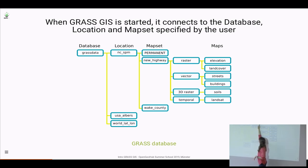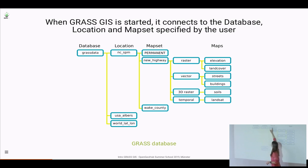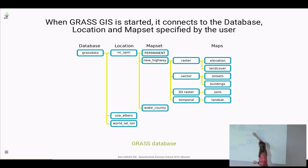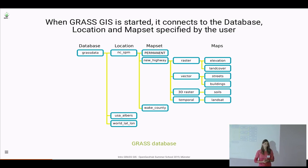GRASS needs this path to start — it needs to know where the GRASS data is, which location, and which mapset you will start the software in. Within each mapset you have all the data: raster, vector, 3D raster, and temporal data. You shouldn't modify this directory structure yourself, only within GRASS, because a raster map is not just one file — it will have the data file, the color table, the nulls file, and many others.